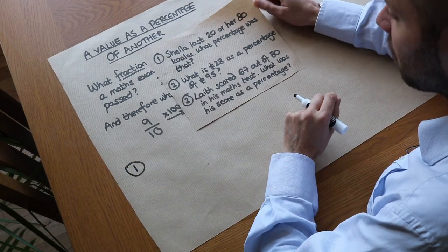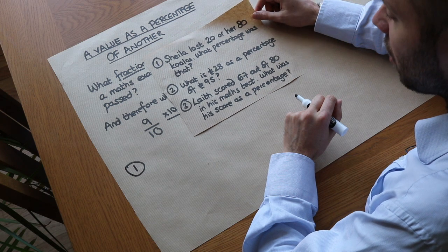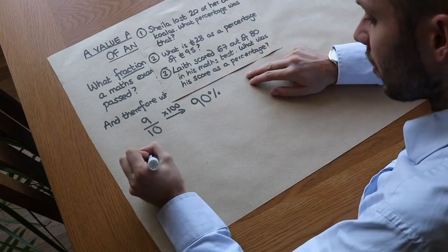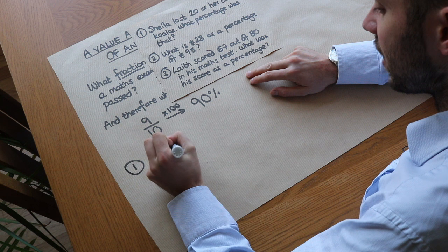Sheila lost 20 of her 80 koalas. What percentage was that? So it's 20 as a percentage of 80.